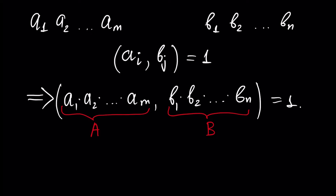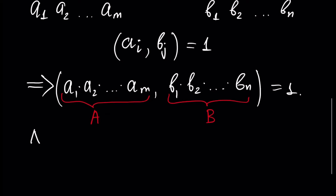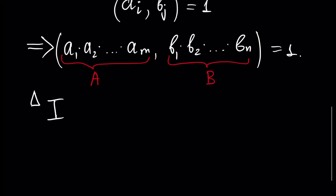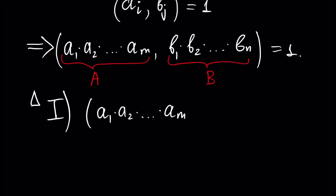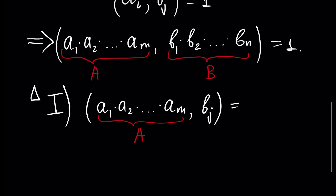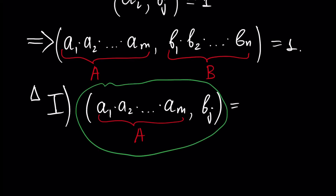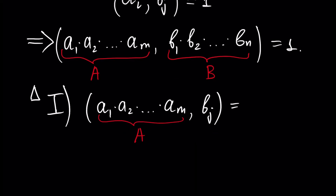How to prove this result? First step: assume GCD of the multiplication A1 times A2 times and so on AN — call it A — and any number of the second set BJ. This is the greatest common divisor of A, which is the multiplication of the numbers of the first set, and any number of the second set.